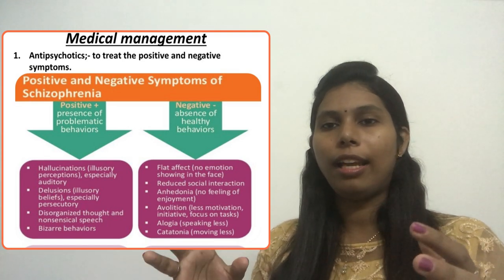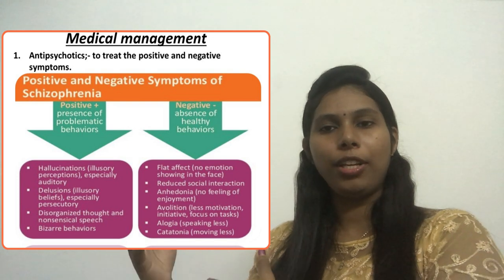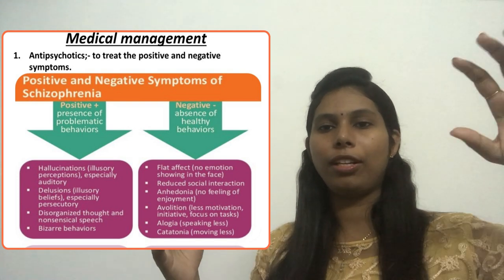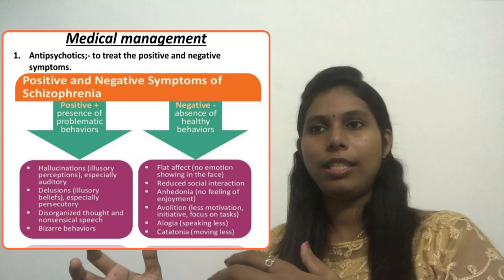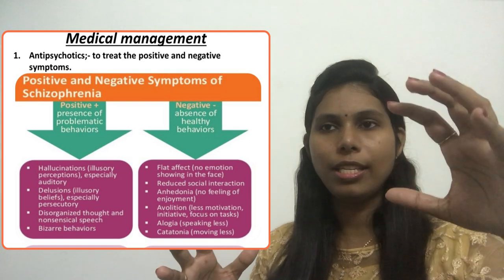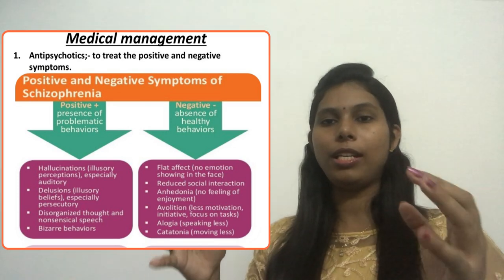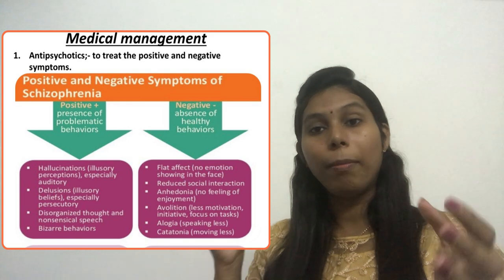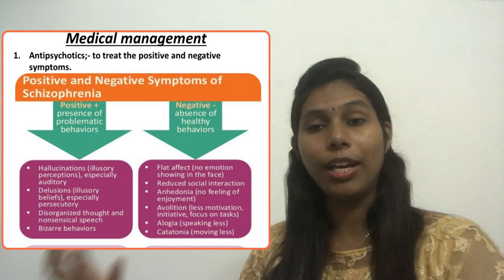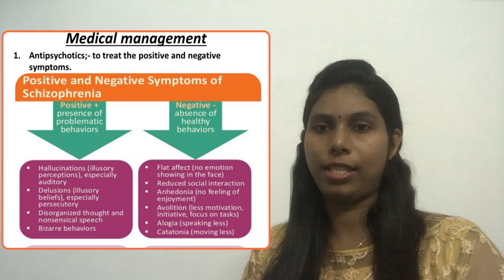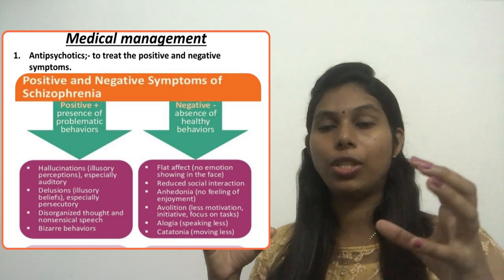Now, positive and negative symptoms — when you hear this, do not think that positive means the client has the disease, like a positive lab result. It has an entirely different meaning here. Positive means the presence of problematic behaviors. If a client has positive symptoms of schizophrenia, they have problematic schizophrenic behaviors. Negative means the client is not showing healthy behaviors that a normal person is supposed to have.